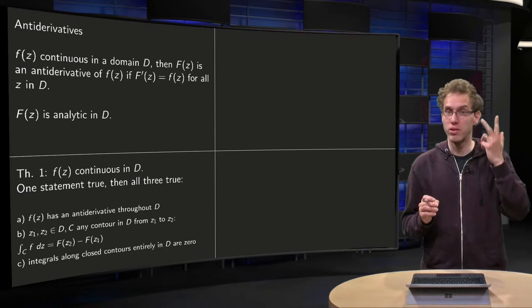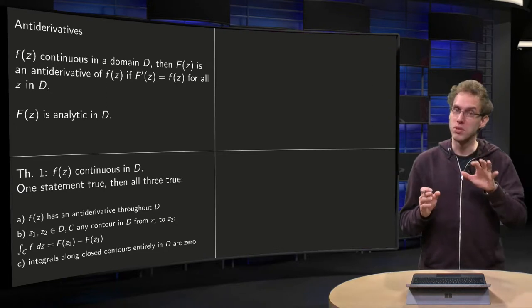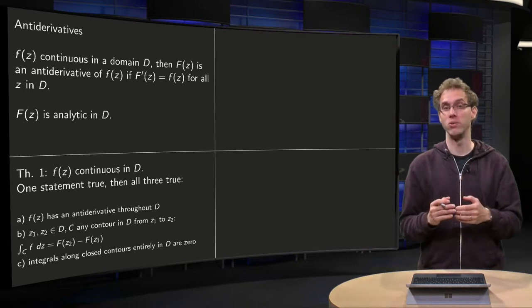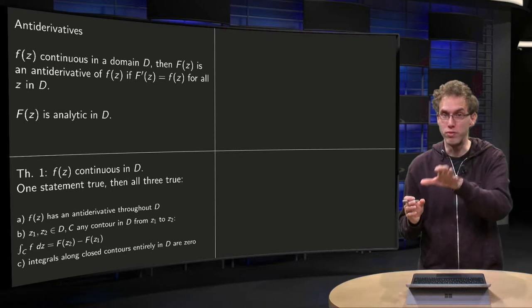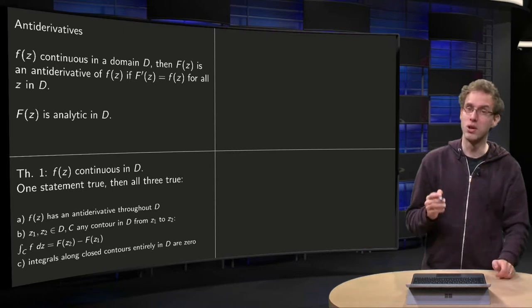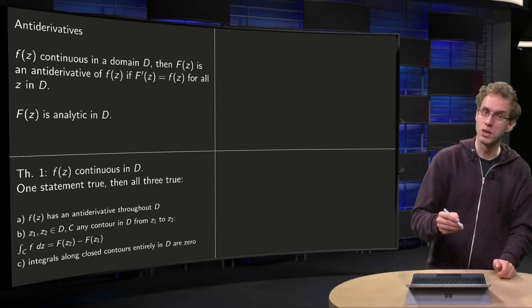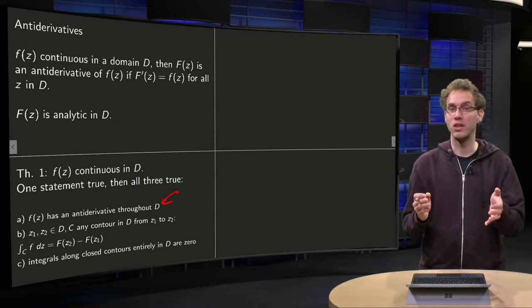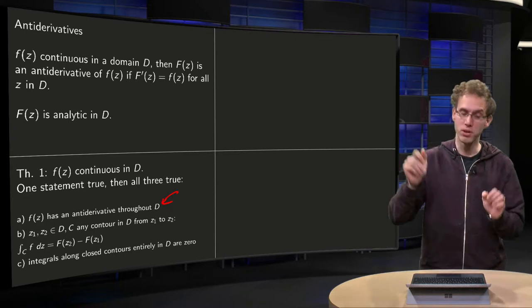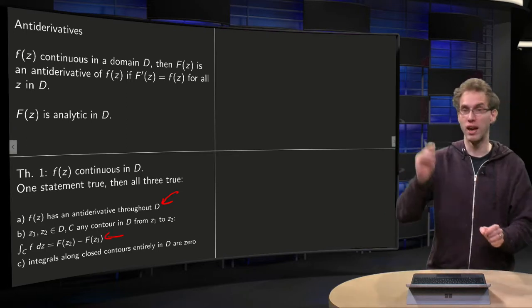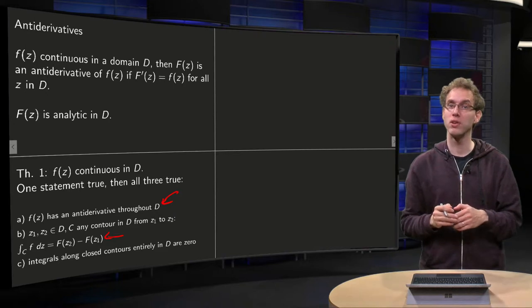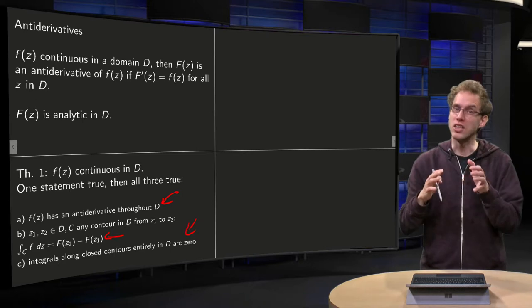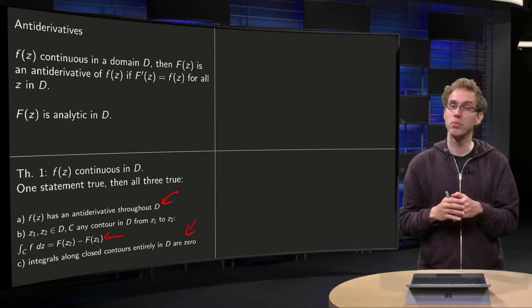Now, we have a theorem which contains three statements, and those statements are equivalent, which means that if one of them is true, all three of them are true. We will use the theorem, we will defer the proof to a separate video. The theorem says, if f has an antiderivative throughout D, then the contour integral only depends on start and end point, and equals capital F in the end point minus capital F in the start point, and consequently, if you have some closed contour inside D, then the contour integral will be zero.